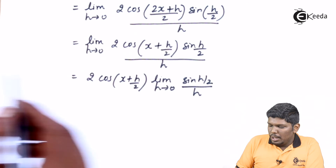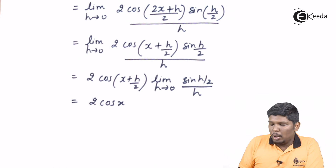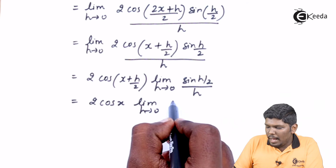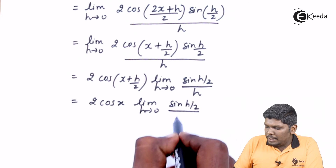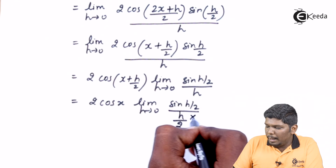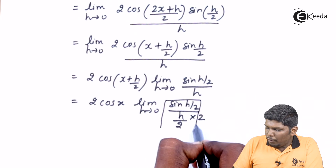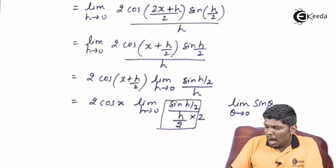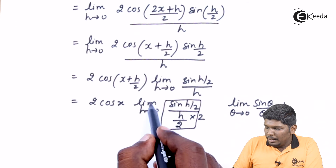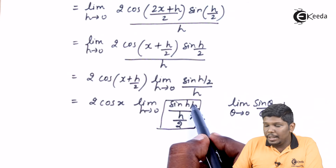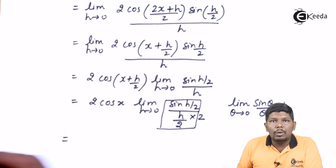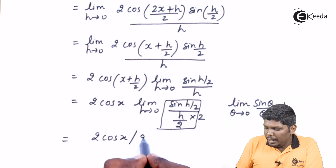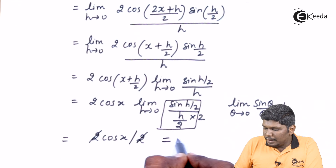In the cosine part, h will be 0, so 0 upon 2 gives 0, and this becomes 2 cos X. For the sine part, we adjust the angle: we have sine H upon 2, so the same H is divided by 2 and to balance this we multiply by 2. This gives the form sine theta upon theta. Since limit theta tending to 0 of sine theta upon theta equals 1, this limit equals 1. So the remaining part is 2 cos X divided by 2, and the 2s cancel.